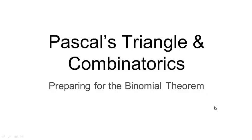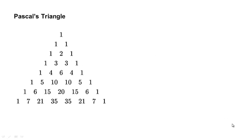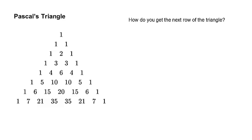In this video, we are going to be looking at Pascal's triangle and its connection to combinatorics. It's a special branch of math, in order for us to prepare for the binomial theorem. Hopefully you have already seen Pascal's triangle. We could spend days talking about all of the cool patterns in this triangle, but for today's purposes, we really just want to make sure that we can answer one question: how do you get the next row of the triangle, if not any row?